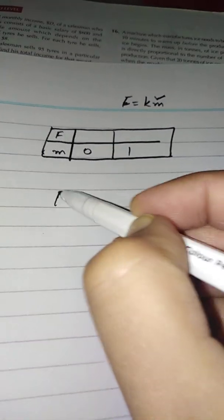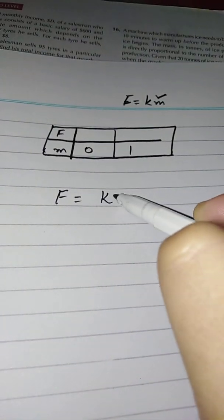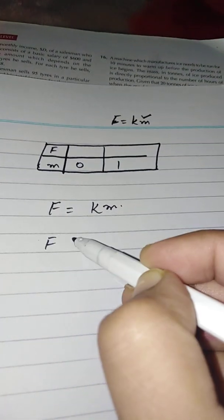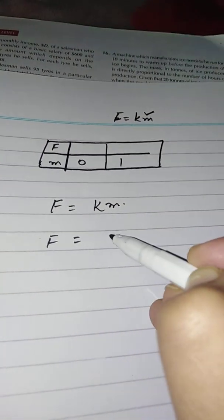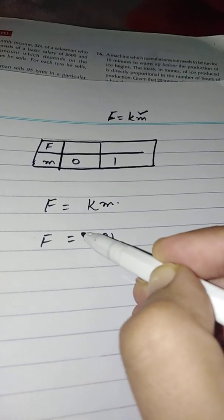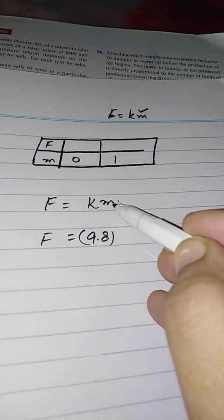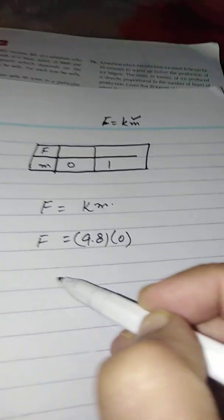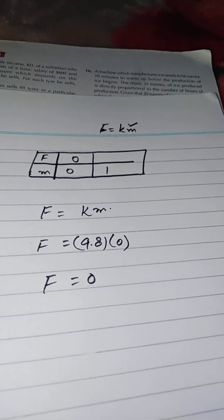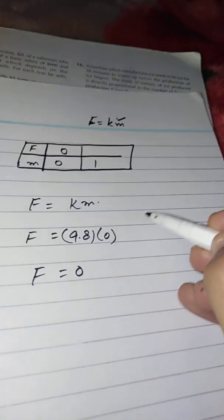You will assume the value of M as 0 and 1, then find the value of F using the equation F equals KM. K is 9.8. When M is 0, F equals 9.8 times 0, so F is 0. Write down the value of F as 0.